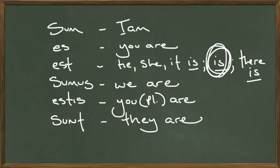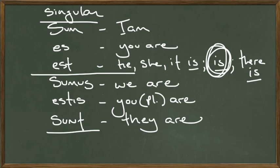This group of six words is divided right here. These guys on top are singular. These are singular. Which explains why over here we have I am, you are, he, she, or it is. And these on the bottom, these three on the bottom, sumus, estis, sunt, they are plural.